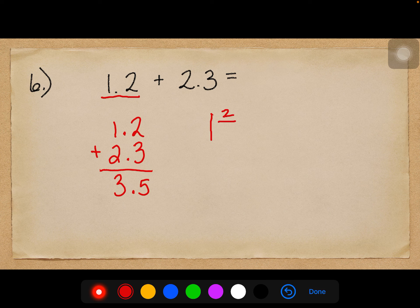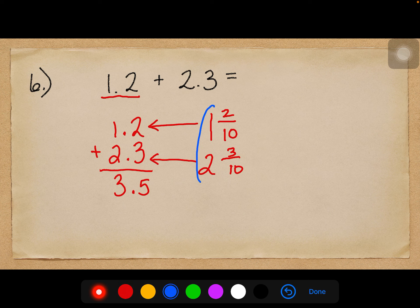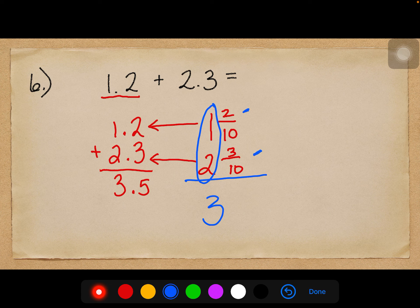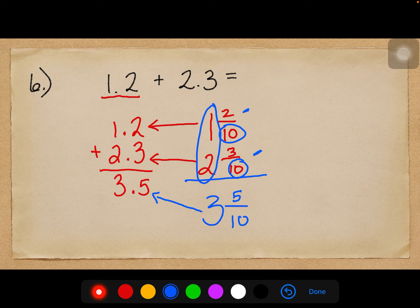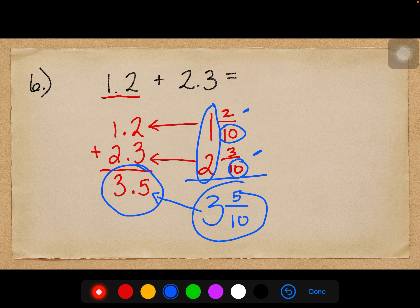1 and 2 tenths, that is exactly the same as this decimal number. And then I have 2 and 3 tenths. That's exactly the same as this decimal number. So I can add my whole numbers, and I get 3, and then I have 2 tenths plus 3 tenths. In order to add, subtract, or compare fractions, I must have the same denominator. In this case, I do. So I just have to add my numerators, and I get 5 tenths, which is exactly the same as this decimal number. So now you can see where decimals and fractions are the same value. They're just written differently. So my answer is 3 and 5 tenths, or 3 and 5 tenths. Either one will count.